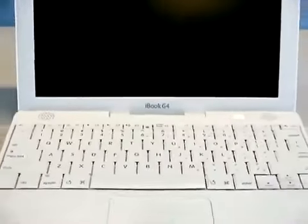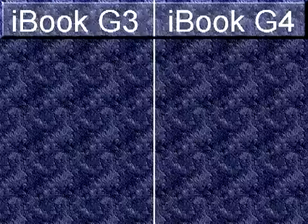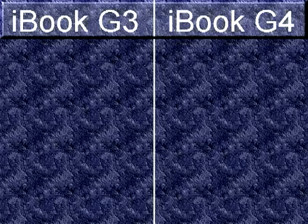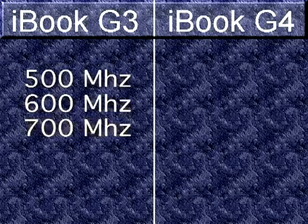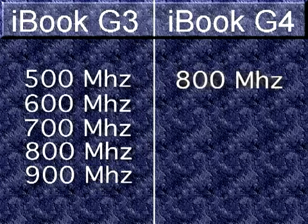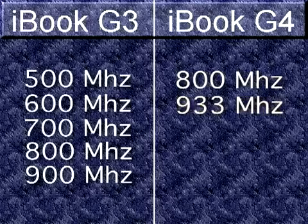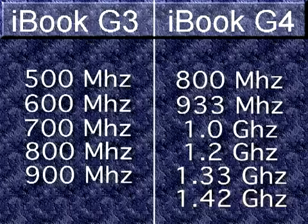The CPU speeds also vary greatly. The G3 was available in 500, 600, 700, 800, and 900 megahertz. Whereas the G4 was available in 800 and 933 megahertz, and 1, 1.2, 1.33, and 1.42 gigahertz.